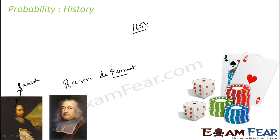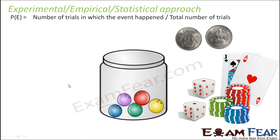The whole probability concept started with gambling, but now it is used in many fields — the insurance sector, the manufacturing sector, physical science, medical science, and weather forecasting. The probability of any event is nothing but the number of trials in which the event happened divided by the total number of trials.